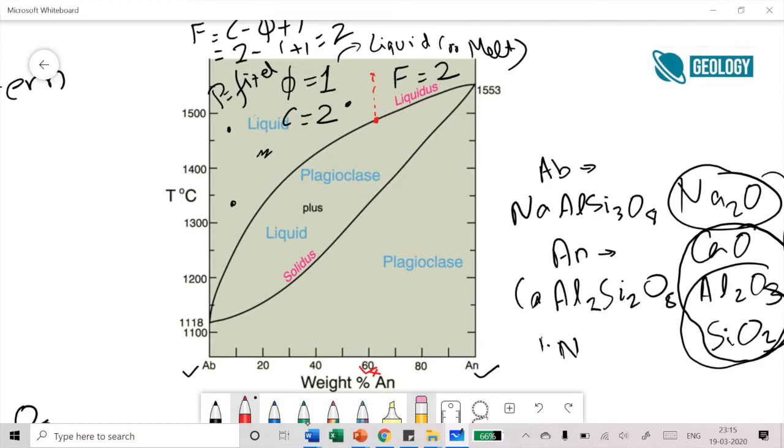At this liquidus curve, at this exact point, there are now two phases. I already have a liquid phase and the plagioclase is also starting to crystallize. The liquidus is going to give us the composition of the liquid and the solidus curve is going to give us the composition of the solid. At this point, my bulk composition is still 60 percent anorthite.